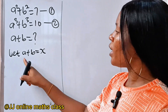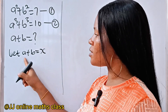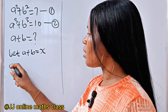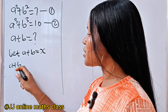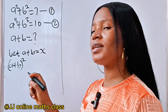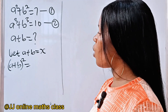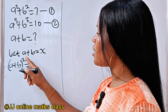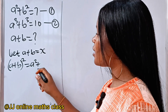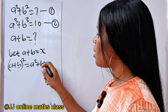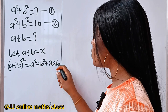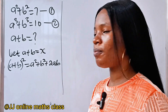Let's square this. So a plus b squared — remember why we are doing that, we need ab — is equal to, by identity, a squared plus b squared plus 2ab.